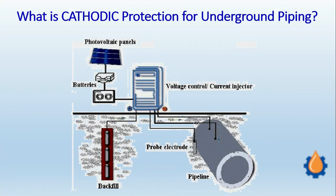In this video, we can see that there is a pipe and some connections — wires are being attached to it. There is also a probe electrode, and this arrangement is what you would come across if you have visited a site that has cathodic protection.